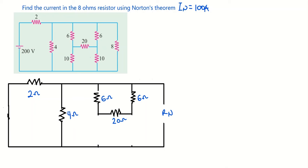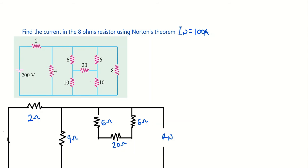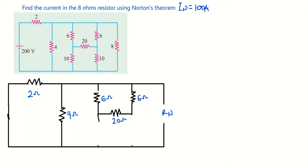I'll redraw the delta connection clearly so we can see it better. We have 10 ohms here and another 10 ohms here. I also have 20 ohms here. We need to change this delta connection to a star connection.